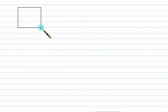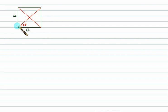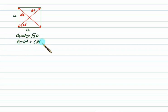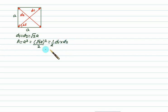This video covers geometry — specifically the calculation of area for standard figures. For a square of side 'a', the area is a². The diagonal bisects each angle to 45°. Using Pythagoras, the diagonal d1 = d2 = √2 × a. The area can also be written as (√2 × a)² / 2, so area = (1/2) × d1 × d2. If the diagonal is given, we can find the area directly.